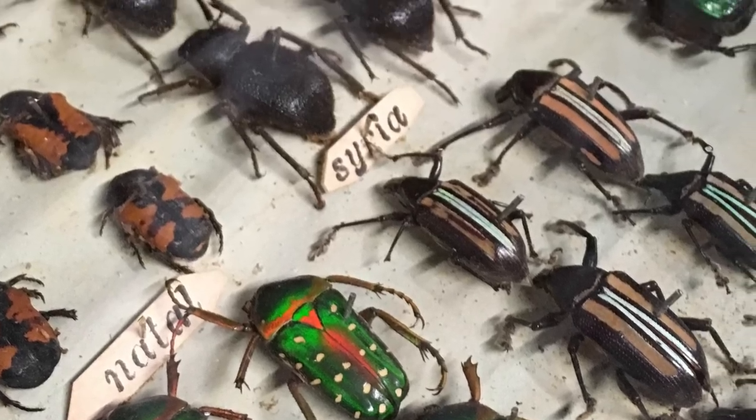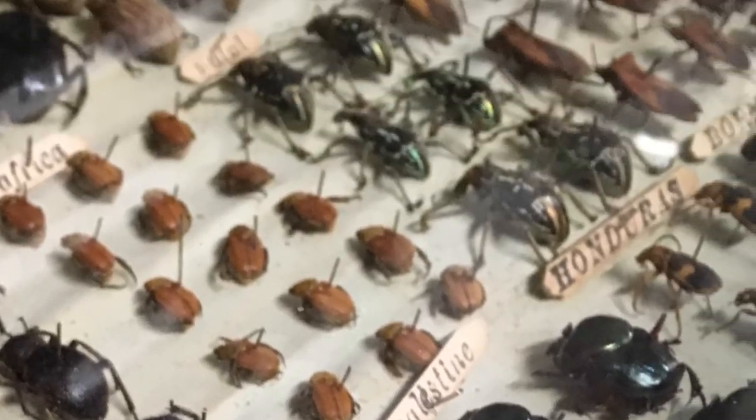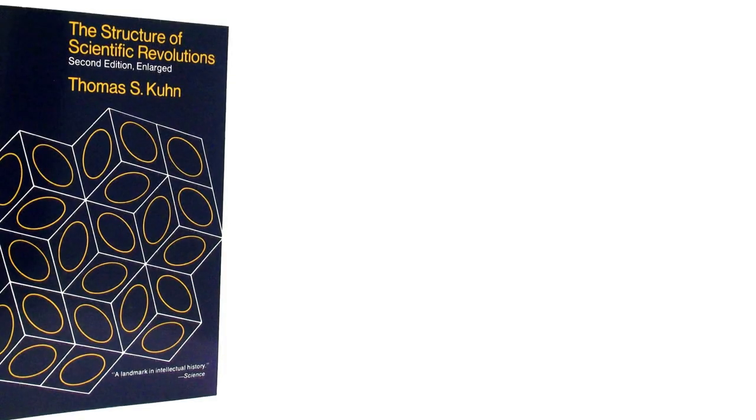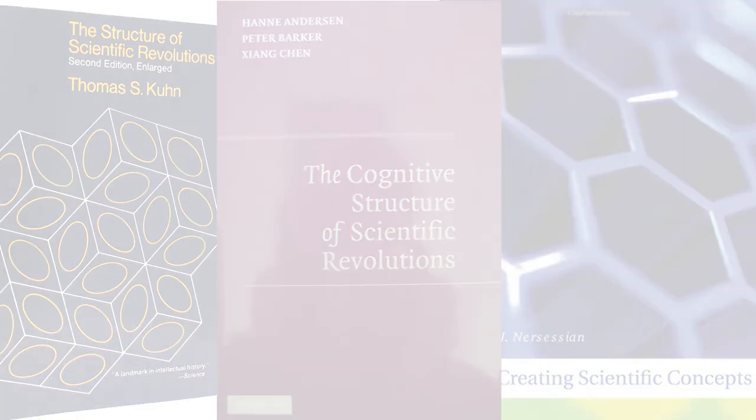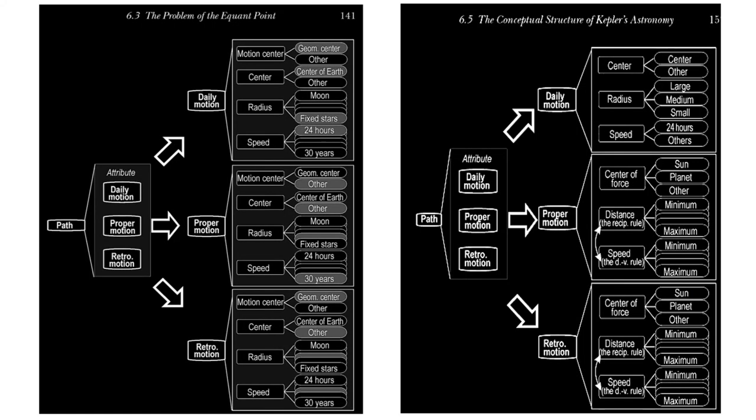We can pick any scientific revolution we like and we will see the same pattern. Specialists who research this, the subject matter experts, have identified recategorization as the defining feature to look for in this kind of cognitive change.